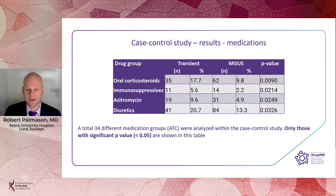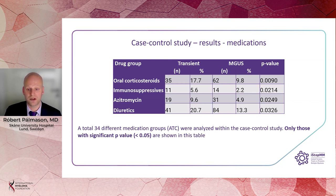We also evaluated the use of medication in the transient M protein cases versus the MGUS controls. We evaluated a total of 34 different medication groups and observed a significantly increased usage of oral corticosteroids, immunosuppressive medication, azithromycin, and diuretics in the transient cohort compared to MGUS.